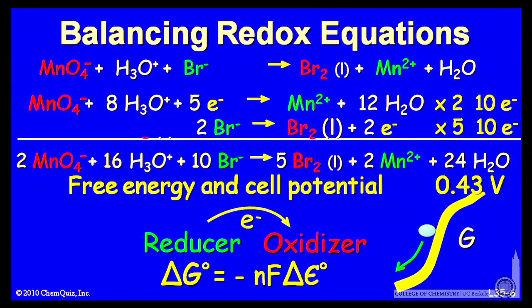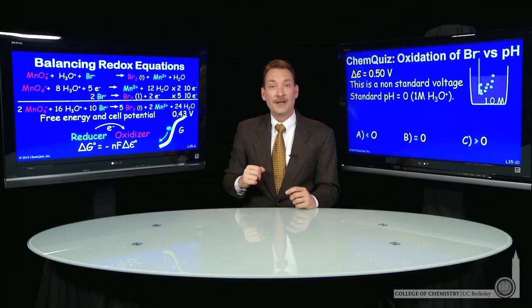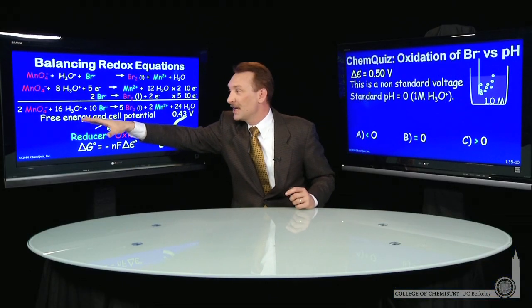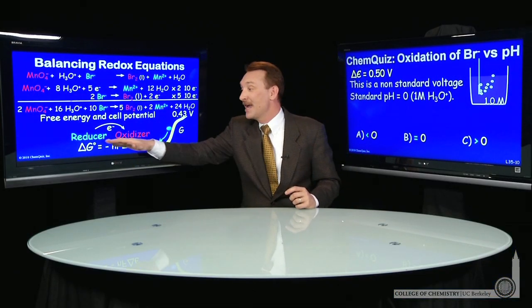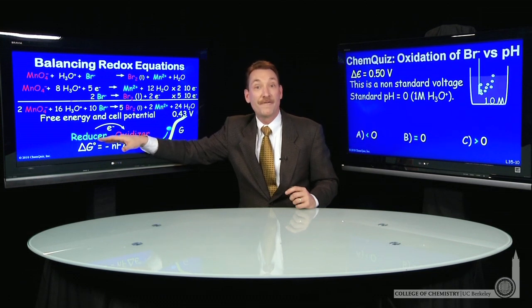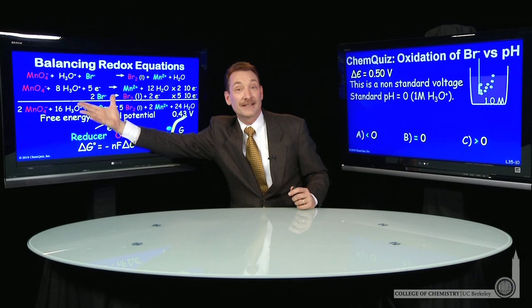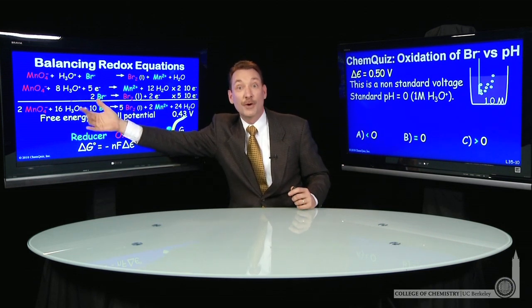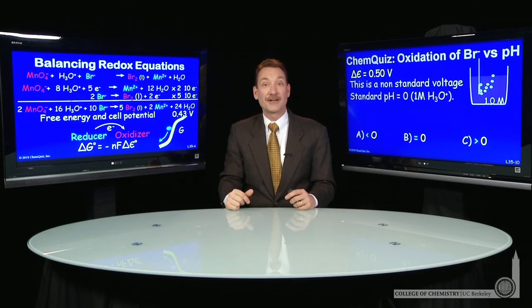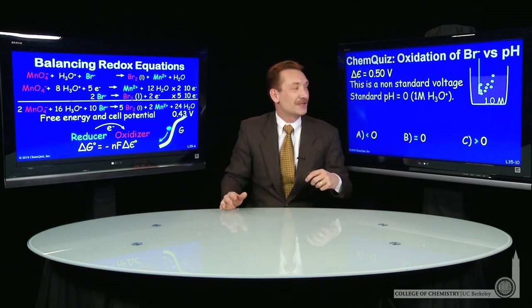We're at a potential of greater than 0.43 volts. So what would make this potential greater to essentially make the reaction more favorable? Well, you could raise the reactant concentrations. Raising the reactant concentrations would increase the potential for the reaction to go.